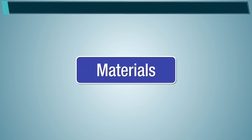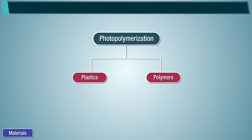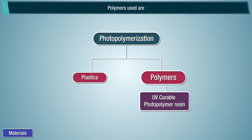The photopolymerization process uses plastics and polymers. The polymers used are UV curable photopolymer resin.